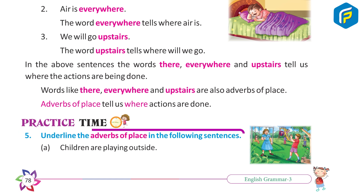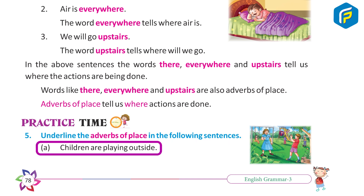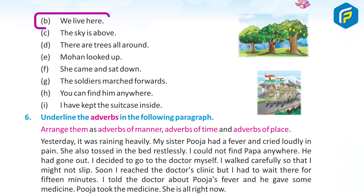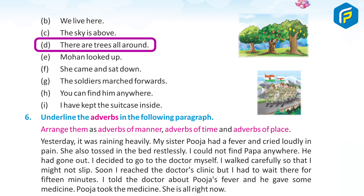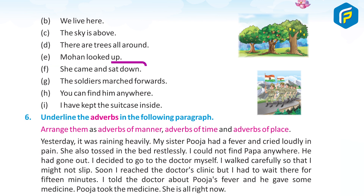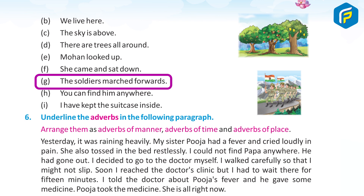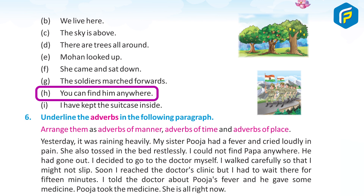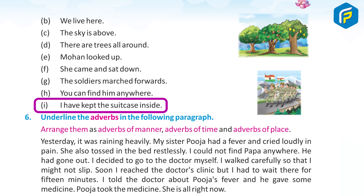Practice Time 5. Underline the adverbs of place in the following sentences. A. Children are playing outside — underline outside. B. We live here — underline here. C. The sky is above — underline above. D. There are trees all around — underline around. E. Mohan looked up — underline up. F. She came and sat down — underline down. G. The soldiers marched forwards — underline forwards. H. You can find him anywhere — underline anywhere. I. I have kept the suitcase inside — underline inside.